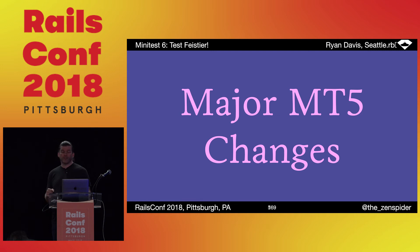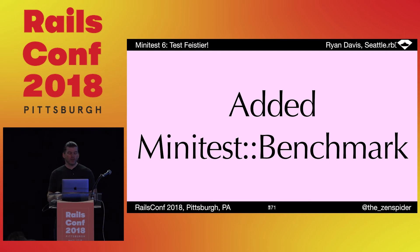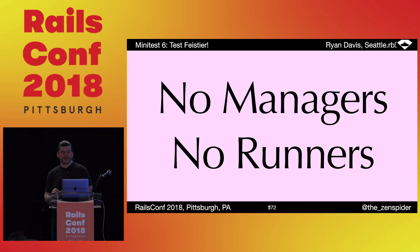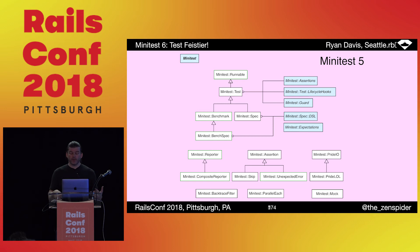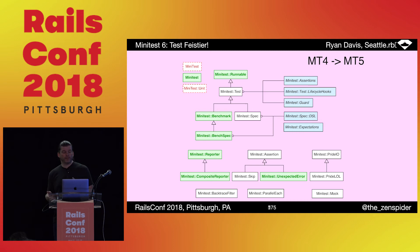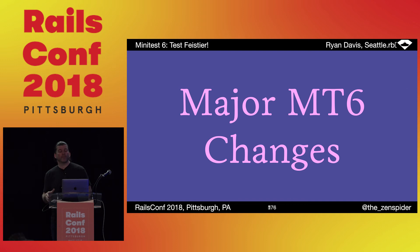To understand where Minitest 6 is trying to go, it might help to see Minitest 5 a bit. One of the biggest incompatibilities going from Minitest 4 to 5 was namespace changes — I added a compatibility layer for users, but it still bit plugin authors. I moved benchmark testing to its own class so they could be isolated. I removed all manager classes and made tests run themselves. Here's the interesting slide — all the new classes are in green and bold, deletions in red and dashed. There were two major namespace changes and a lot of additional architecture. I want to avoid this in Minitest 6.